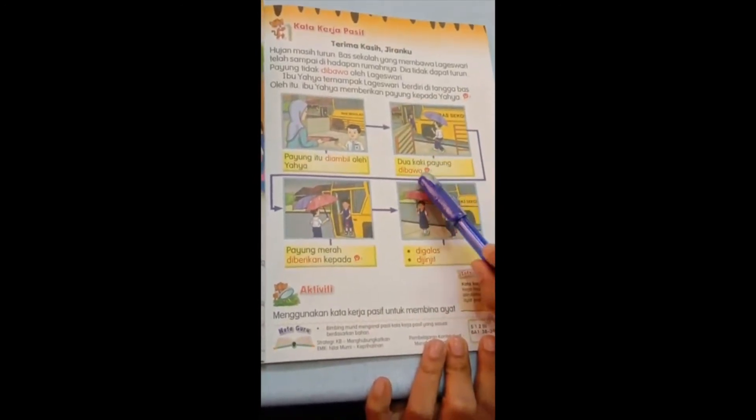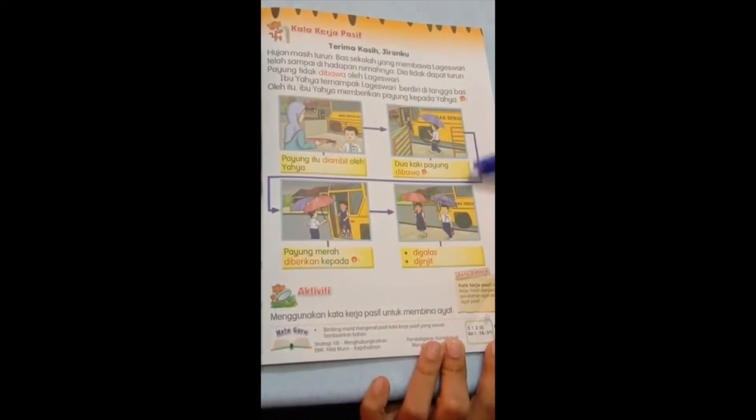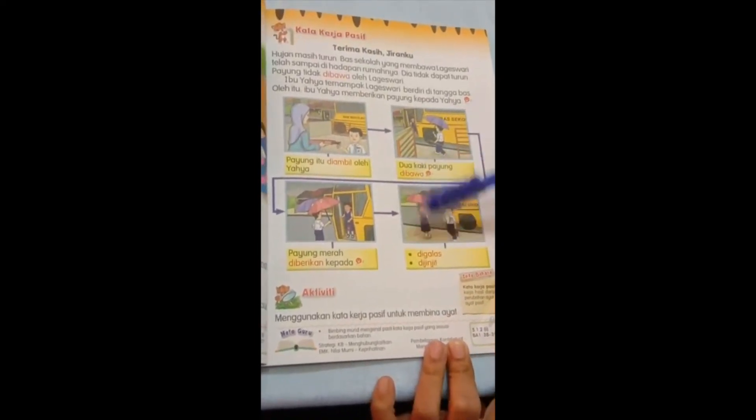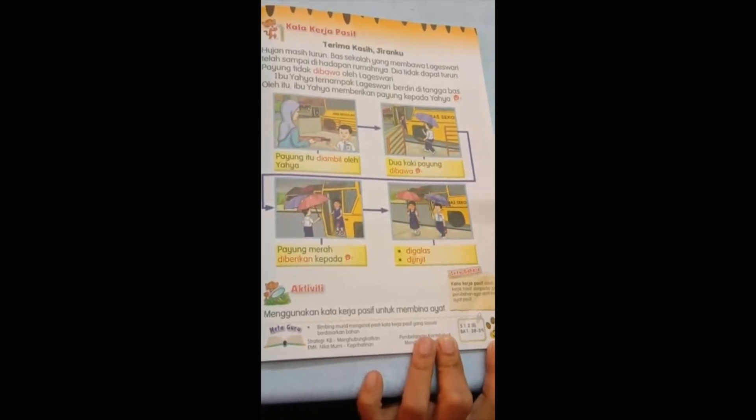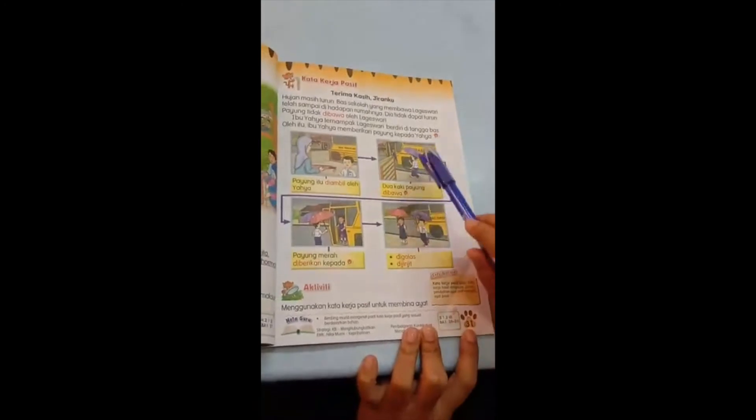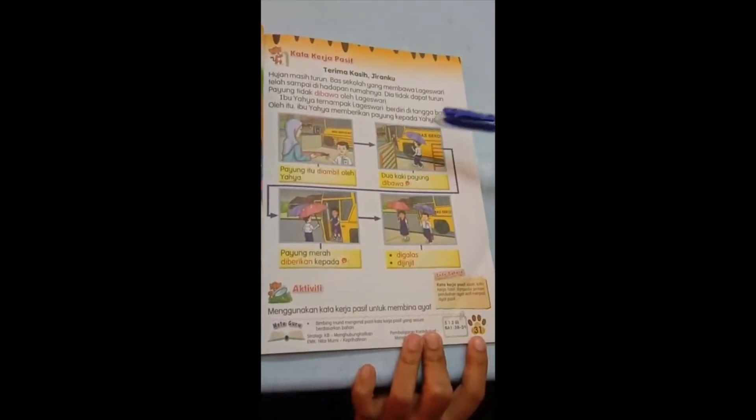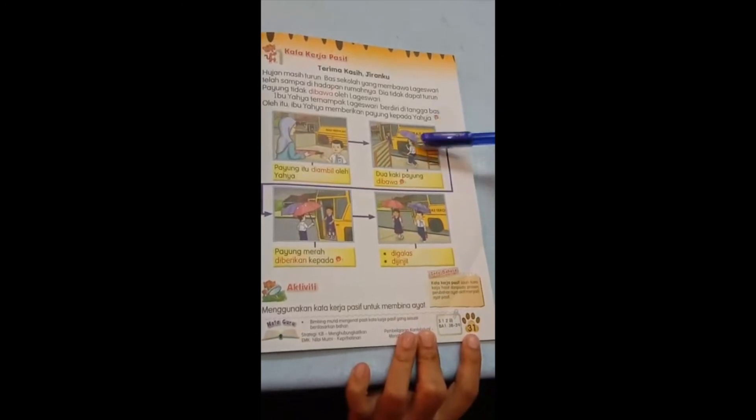Dua kaki payung dibawa oleh Yahya. Listen to all the answers that teacher giving you now. Because later I want you to make the sentence. So you must listen carefully. Why dua kaki? Because he is holding one in the hand and he is also using one.